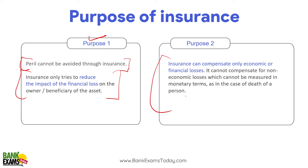Second point: insurance can only compensate for economic or financial losses. For example, if someone has health insurance and gets a heart attack, insurance only provides money for the treatment. If someone has life insurance and that person dies, only a claim would be provided to the family. The emotional attachment and non-financial losses cannot be reimbursed by the insurance company. Insurance can only compensate economic or financial losses.